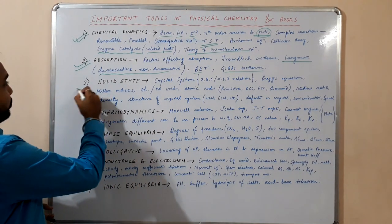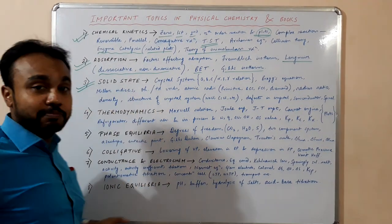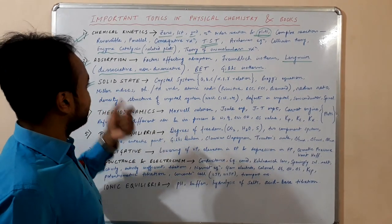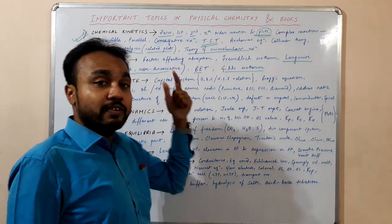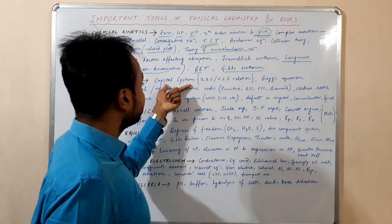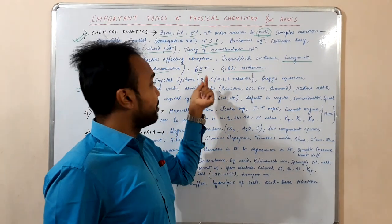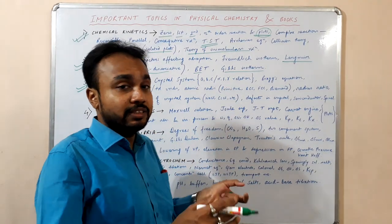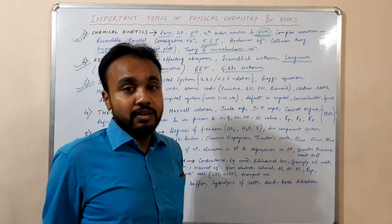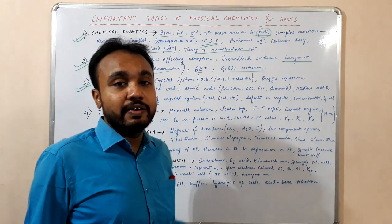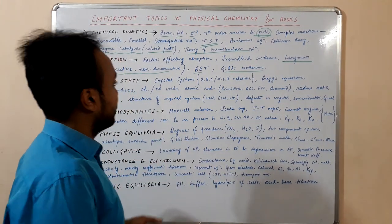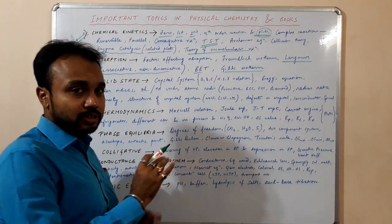Next is solid state, which is another important chapter in physical chemistry. In solid state you have to read all the seven crystal systems, and the relations between A, B, C (the edge lengths) and the relations between alpha, beta, and gamma. This applies to monoclinic, triclinic, rhombohedral, tetragonal, cubic — everything you have to just memorize.